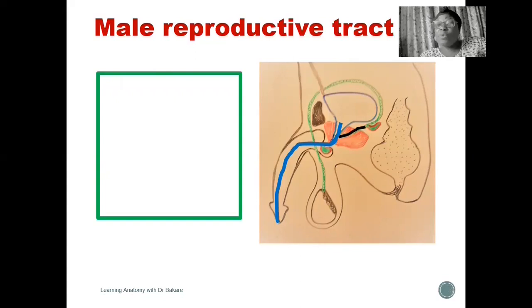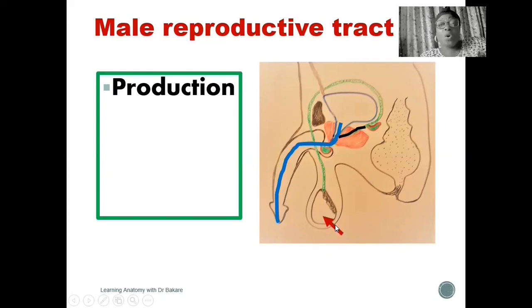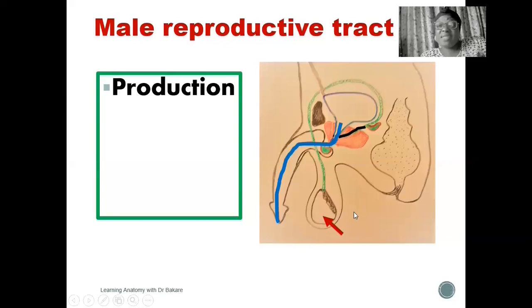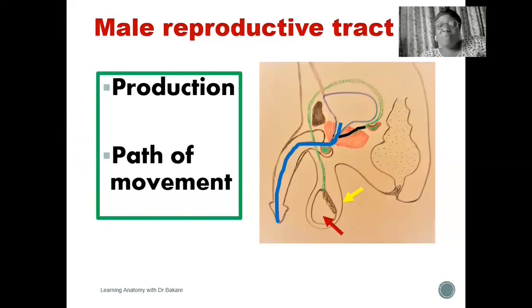Before the semen or ejaculate will run through the male reproductive tract, it needs to be produced. The testis, arrowed in red, is where the production of sperm occurs before it's finally pushed through the male reproductive tract and released to the outside, either for the process of fertilization or otherwise. The testis is enclosed in a coat referred to as the scrotum, arrowed here in yellow. The scrotum is like a protective jacket. After the production of sperm, it is then released through the male reproductive tract.